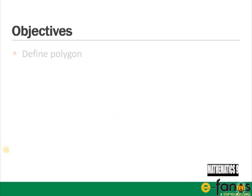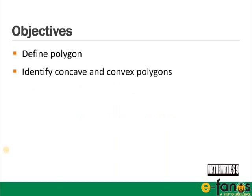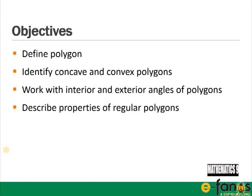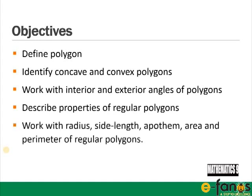The objectives for this module are to define polygon, to identify concave and convex polygons, to work with interior and exterior angles of polygons, to describe properties of regular polygons, and to work with radius, side length, apothem, area and perimeter of regular polygons.